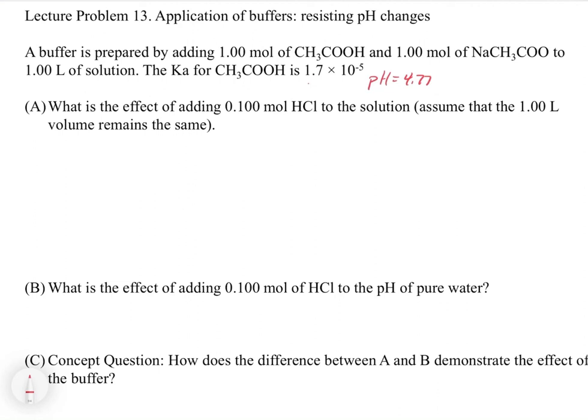We know from the last problem that the pH is equal to the pKa, which is the negative log of the Ka for acetic acid — 1.7 times 10 to the negative 5. In this case we have one mole of the conjugate base and one mole of the acid, so the pH equals pKa because we have equal amounts of acetic acid and conjugate base. That's set up this way for a reason we'll talk about in a moment.